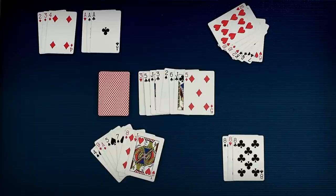Okay, listen up. Your turn consists of three parts. You draw, you create melds, and then you discard.